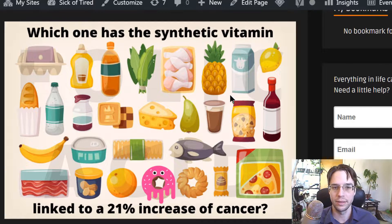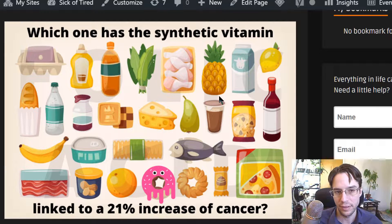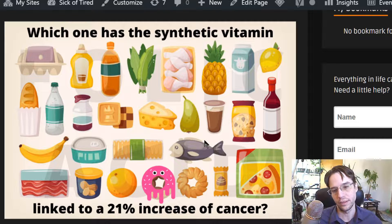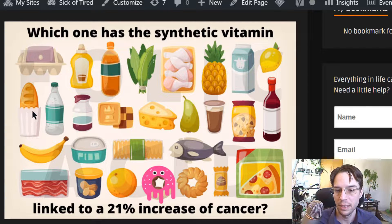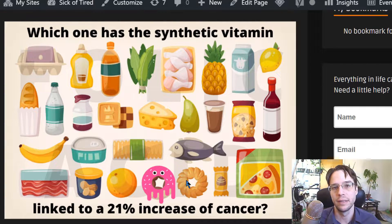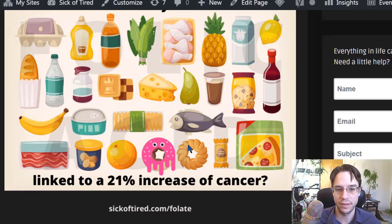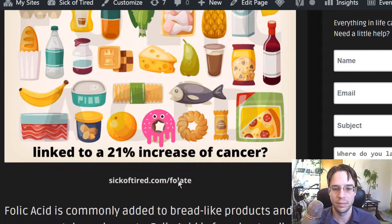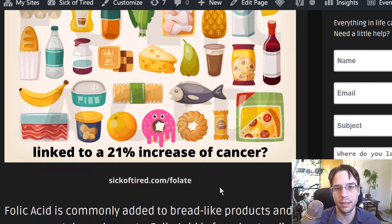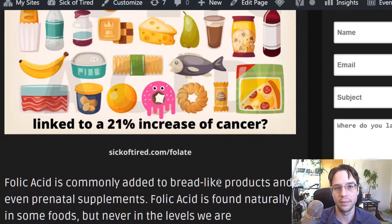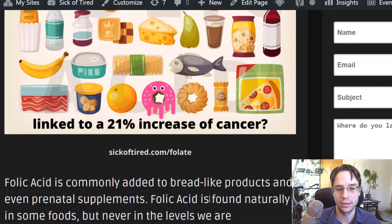So I put together this graphic the other day showing which synthetic vitamin is linked to a 21% increase in cancer. That's bread products, bread, cereal, all that type of stuff. I explain more on my website sickoftired.com/folate and I link up the studies that show all of this.